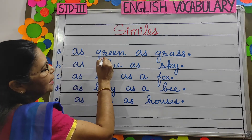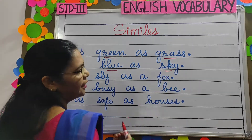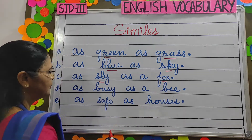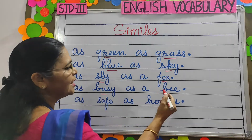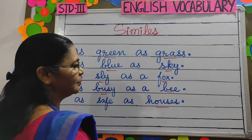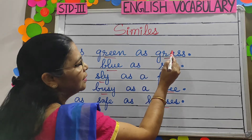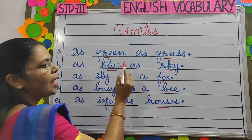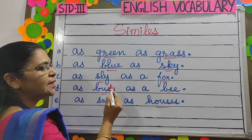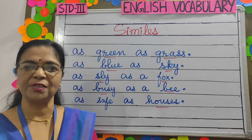As green as grass. As blue as the sky. As sly as a fox. As busy as a bee. As safe as houses.